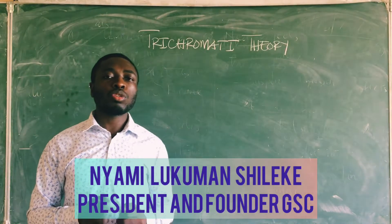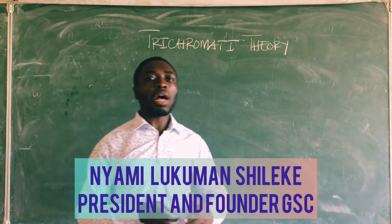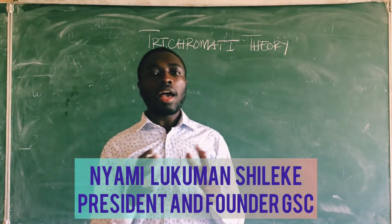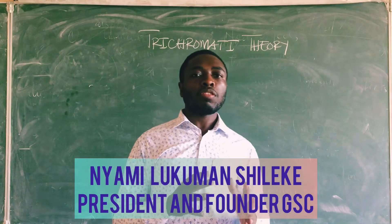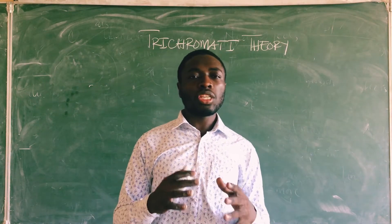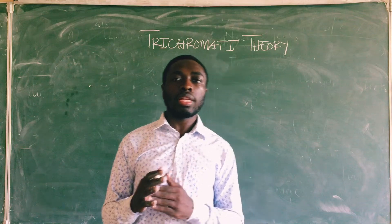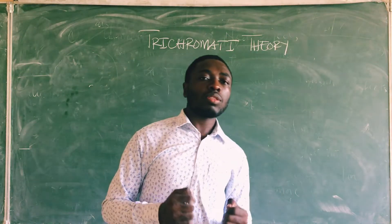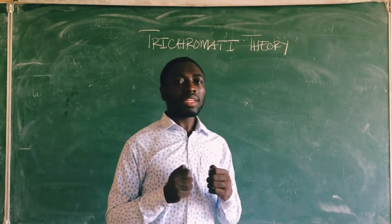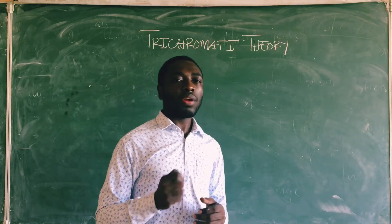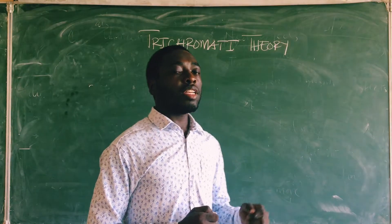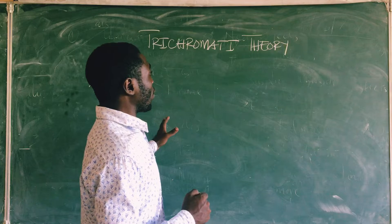In the previous videos we saw accommodation, which is a process by which the eye focuses an object on the retina by changing the shape of its lens, and equally how the eye adjusts itself when one gets into an area of dim light or bright light. Now in this part of the video we are going to be discussing the Trichromatic Theory of Colour Vision.